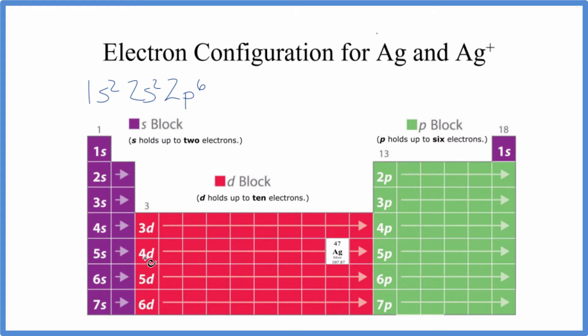If we follow over here, we have 4d: 1, 2, 3, 4, 5, 6, 7, 8, 9. So we should end in 4d⁹. It's helpful to think about that. This is why this is really a helpful table.